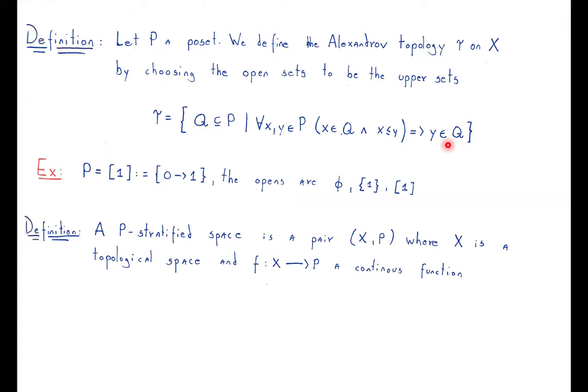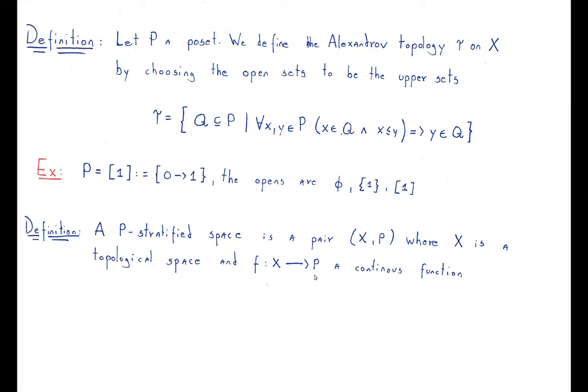A P-stratified space is a pair where X is a topological space and we have a continuous function from our topological space to the poset — we see the poset as a topological space, so it makes sense to talk about a continuous function. For example, take the interval [0,1]: we can stratify it by picking {0} as the zero stratum and then the rest of the interval as the one stratum.